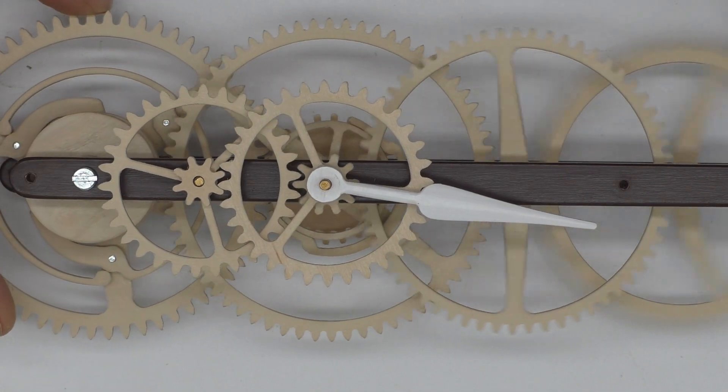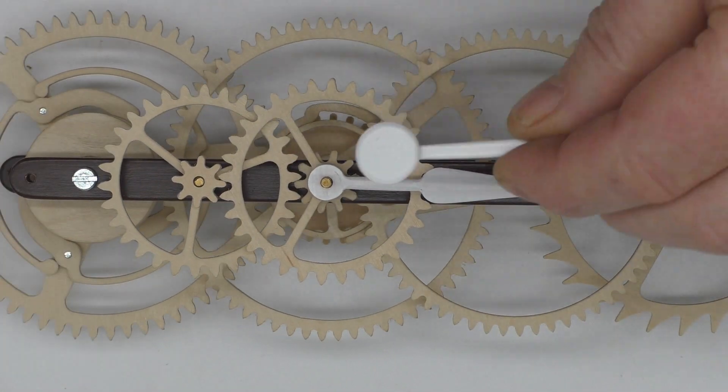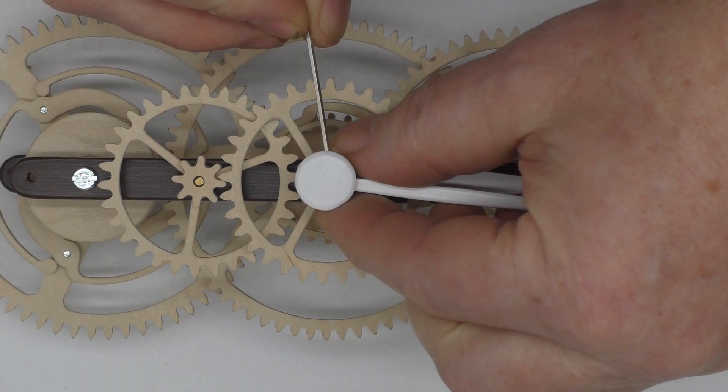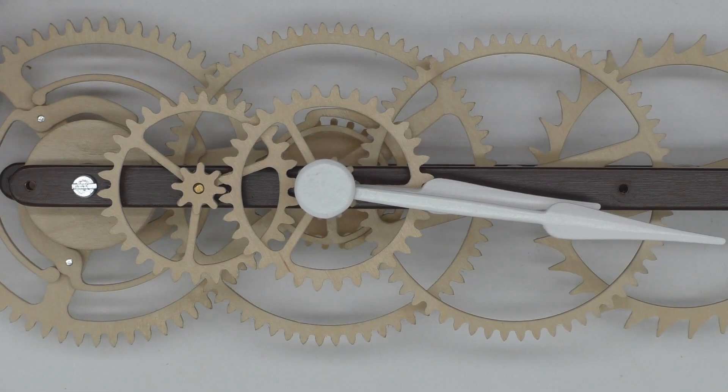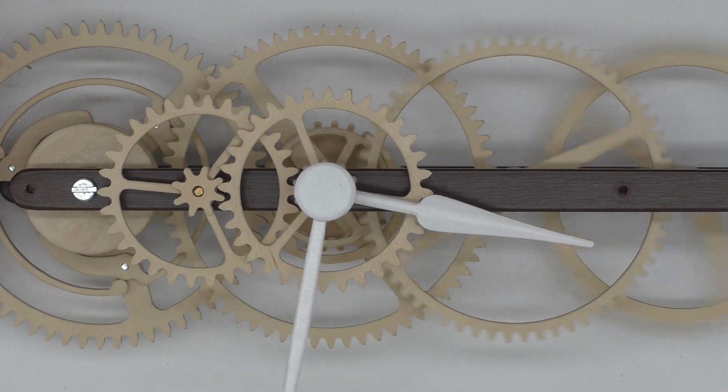To synchronise both hands, make sure the hour hand points to 12 o'clock before you add the minute hand. The minute hand should also point to 12 o'clock when it is tightened.